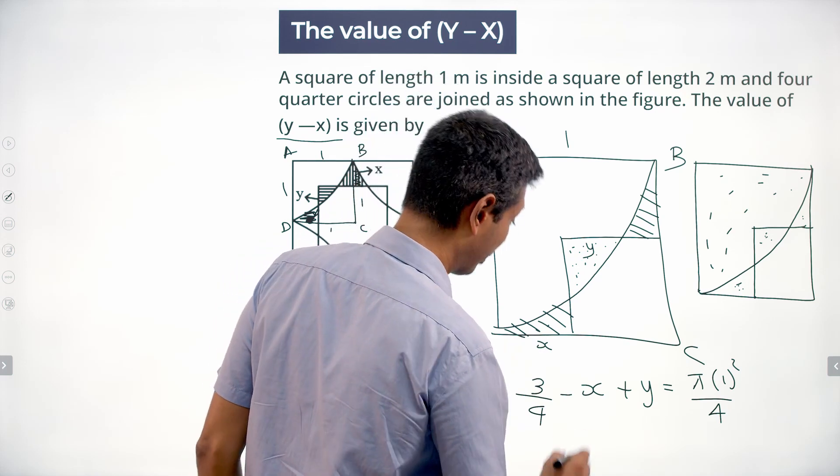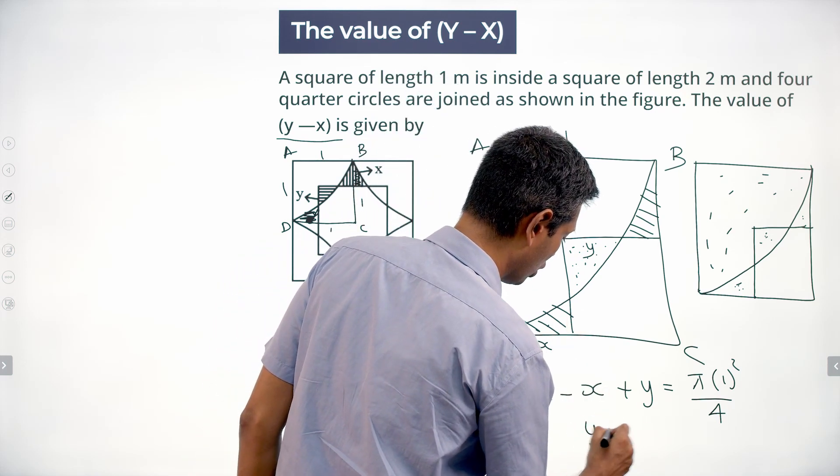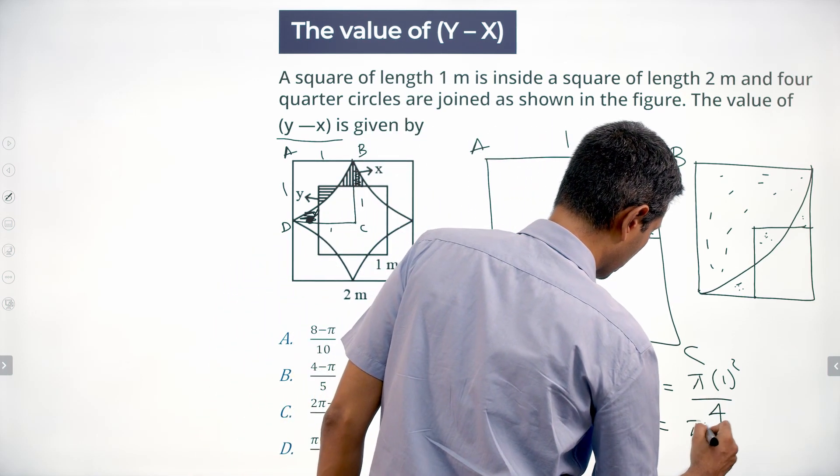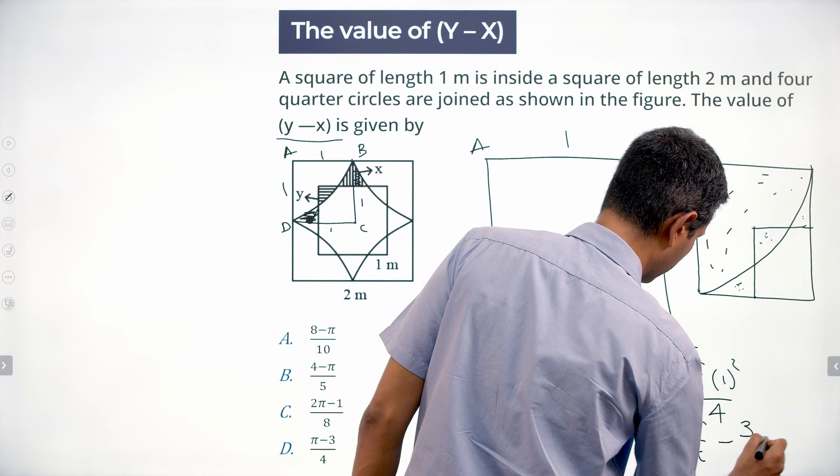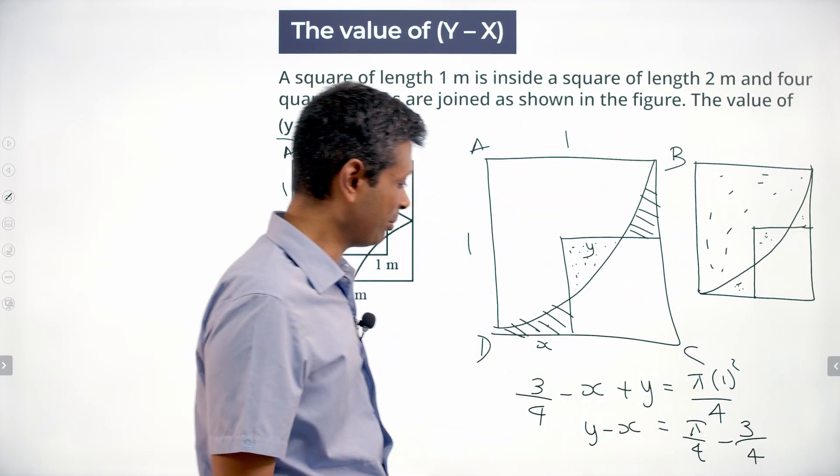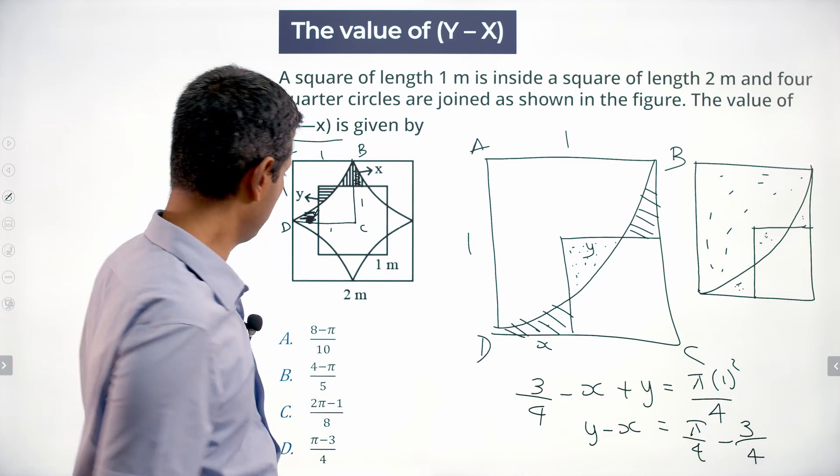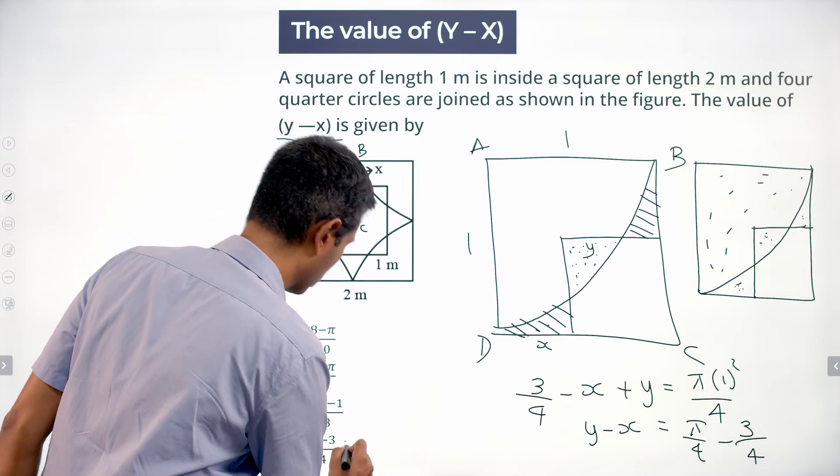I want to get y minus x. Y minus x stays this side. Y minus x equals π/4 - 3/4, or y minus x is (π - 3)/4. Do I have that? π minus 3 by 4. Done.